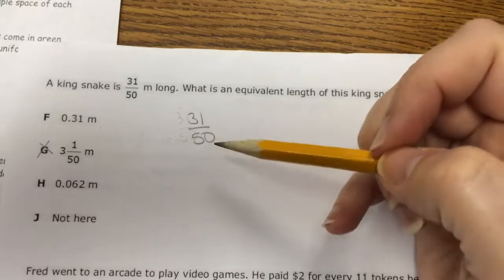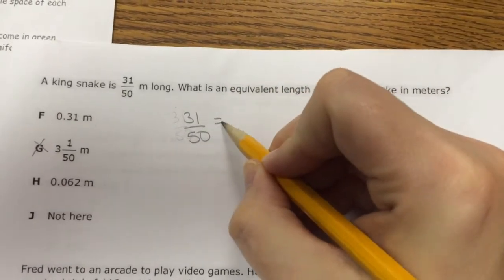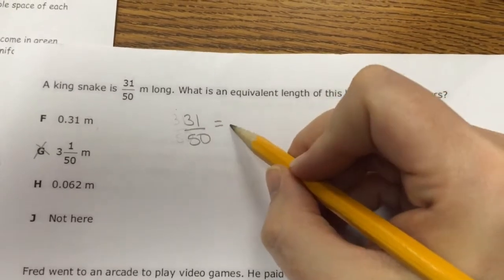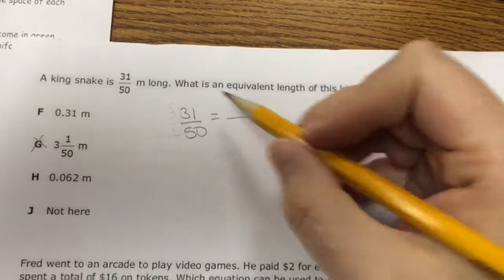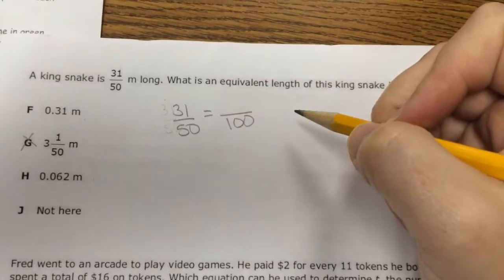The other two I'm not so sure, so I need to take 31/50 and make it into a decimal. The first thing I'm going to do is take it and try and create an equivalent fraction with a denominator of 100. That makes making decimals really easy.